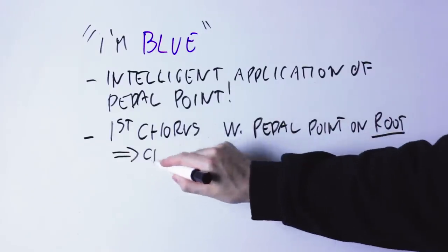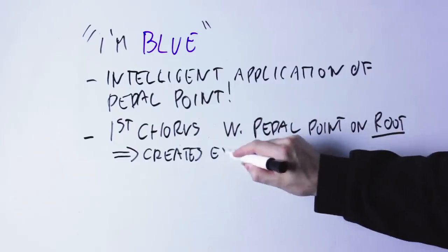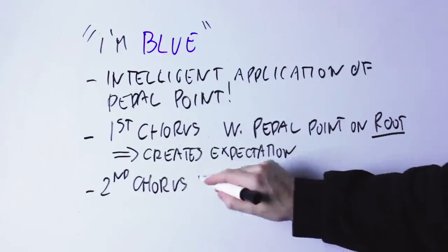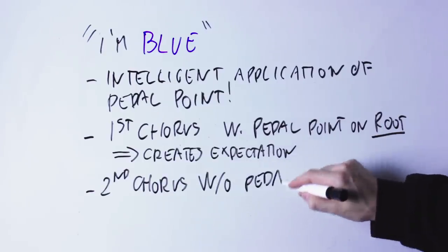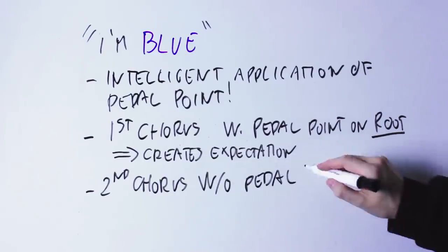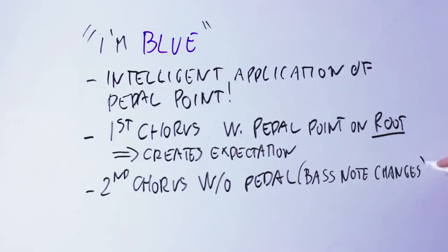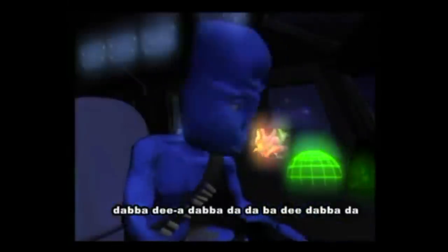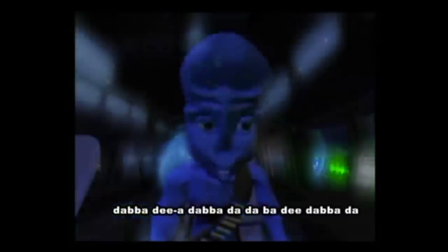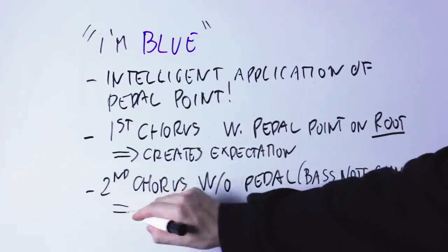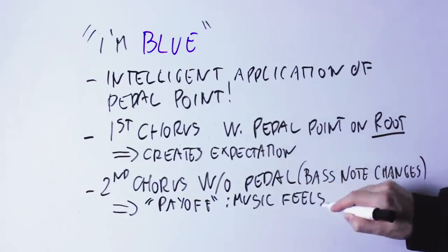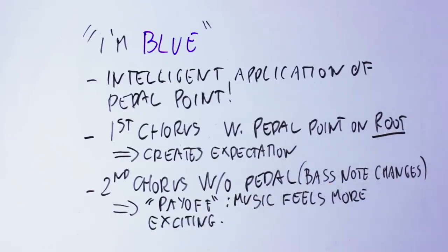Since the melody cannot move away from this root note because the root note is held throughout, this builds expectation. You want this melody to get unchained from the root note and get into its more natural chord progression. Then, just after that, we hear the chorus without the pedal. Now the chord progression is not nailed down to the root note anymore and the whole music feels a lot more exciting.